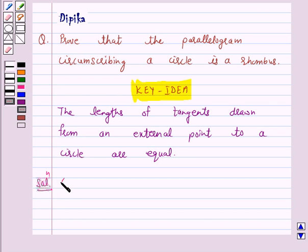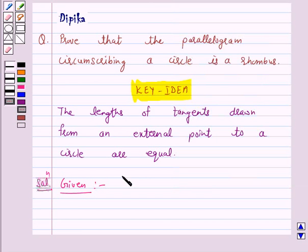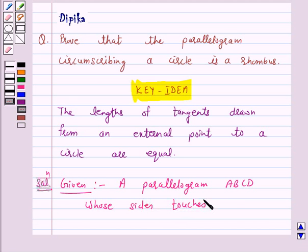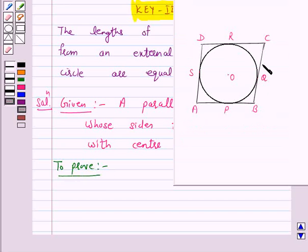Now we are given a parallelogram ABCD whose sides touches a circle with center O. Now we have to prove ABCD is a rhombus.